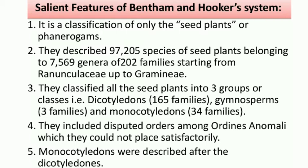Fourth point: they included disputed orders among Ordines Anomali, which they could not place satisfactorily — their placement was not as per botanical rules or morphological criteria. Fifth: Monocotyledons were described after Dicotyledons. Actually, they should have classified Monocot first and then Dicot, but they placed Dicot first.